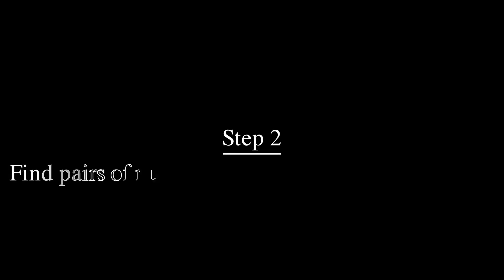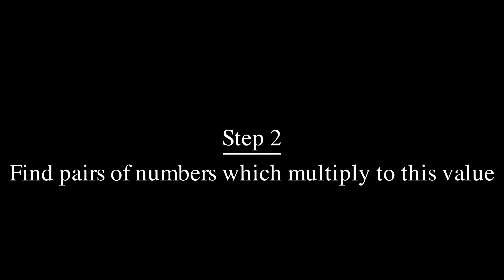Step two is to try to find all of the pairs which multiply to this number. Now turns out you don't really need to find all of them but go ahead and write down as many numbers as you can that multiply to the magenta value for now. Pause the video and resume when you're ready to continue.